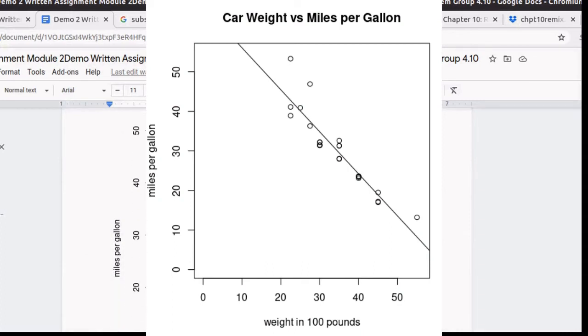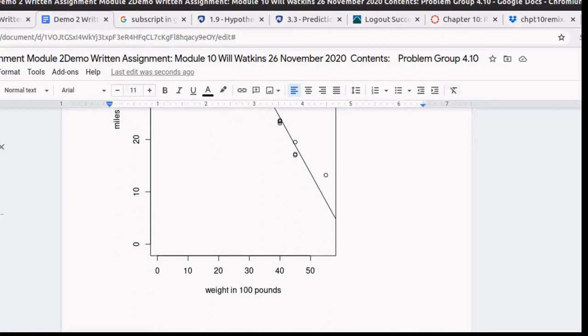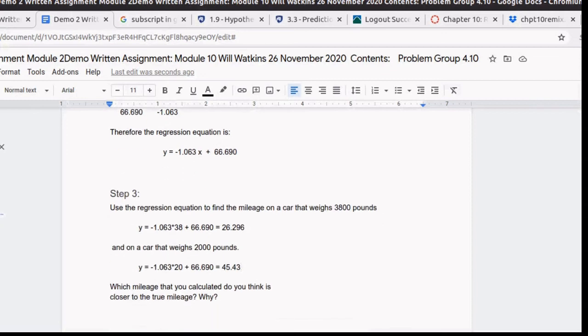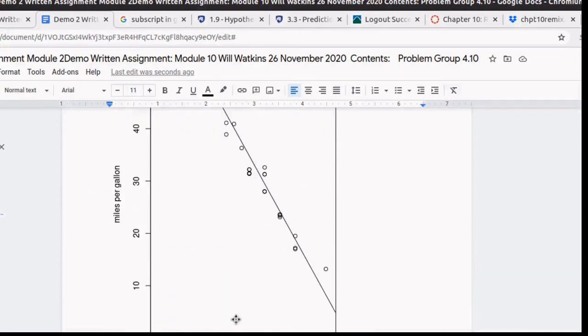So here we've got values running all the way from 20 out to more than 50. Definitely that calculation when we were looking at 3,800 is really kind of in the middle of the data. So it's definitely an interpolation. Out here at 20, we're out on the very edge. It's almost an extrapolation. That would be one reason that I wouldn't think that it would be accurate.